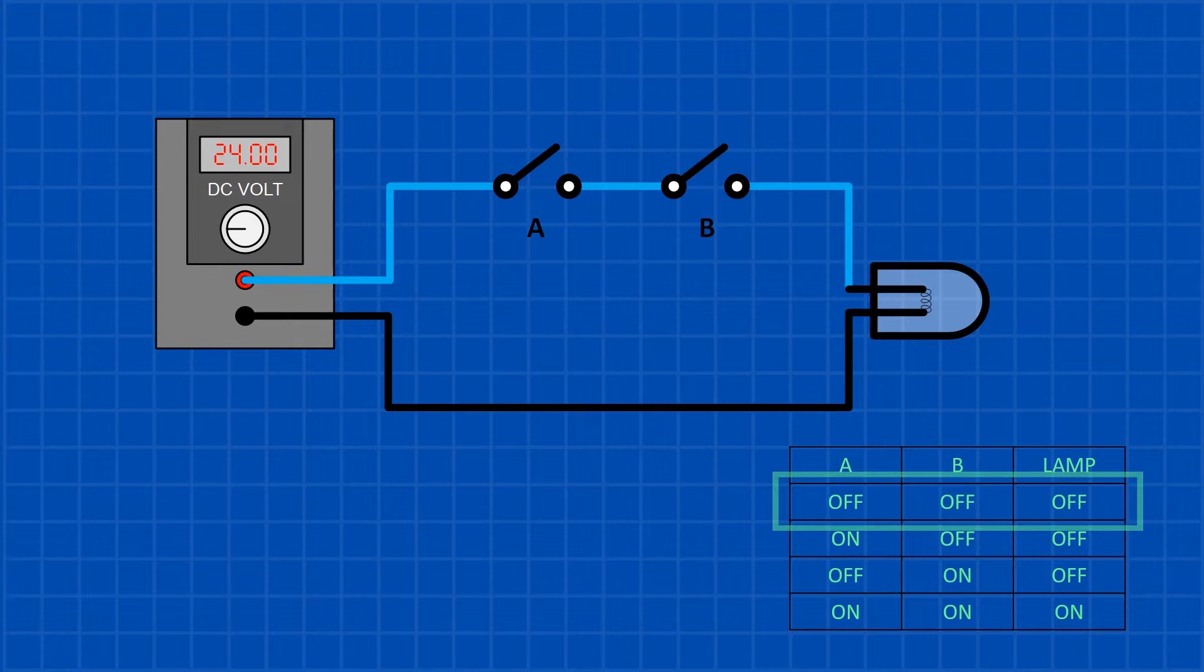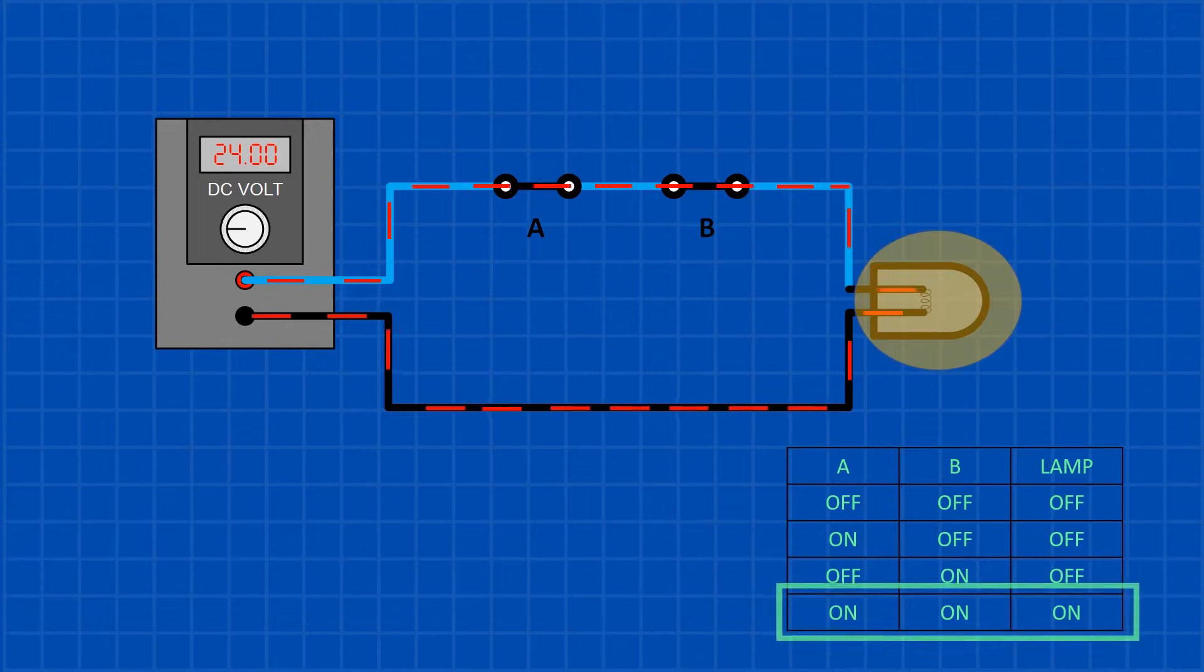If we have a series connection between two switches A and B and a light bulb connected to a power source, the only way the light will come on is by closing both switches. This is called AND logic.